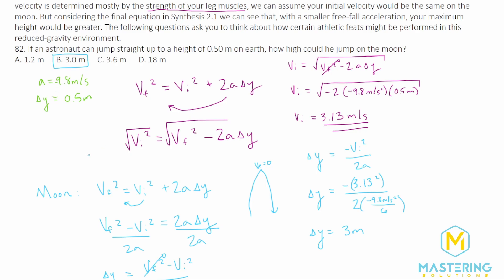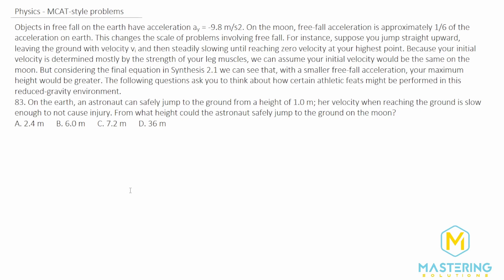Now let's move on to the second of the three MCAT-style problems. In this question, they tell us that on Earth an astronaut can safely jump to the ground from a height of 1 meter, and her velocity when reaching the ground is slow enough that it won't cause injury. They ask: what height could the astronaut safely jump to the ground on the Moon? The key insight is that whatever the safe landing speed is on Earth, it will be the exact same safe landing speed on the Moon — but it will correspond to a different delta y. We'll use the equation v final squared equals v initial squared plus 2a delta y. The initial velocity is zero at the height of the jump, so that term goes away.